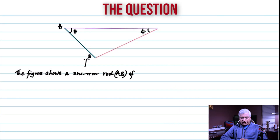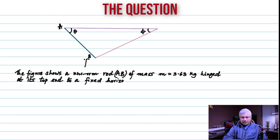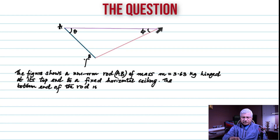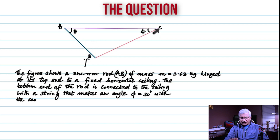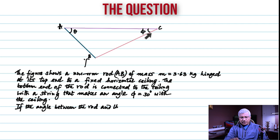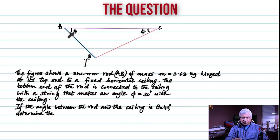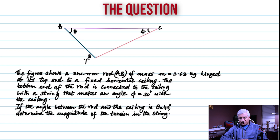Here's the question. The figure shows a uniform rod AB of mass m = 3.63 kilograms, hinged at its top end to a fixed horizontal ceiling. The bottom end of the rod is connected to a string, and the string makes an angle phi = 30 degrees with the ceiling. The angle between the rod and the ceiling is 40 degrees. Determine the magnitude of the tension in the string.